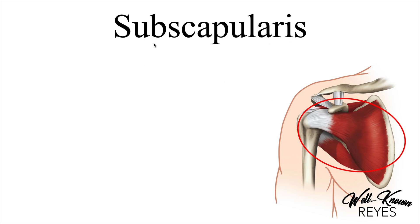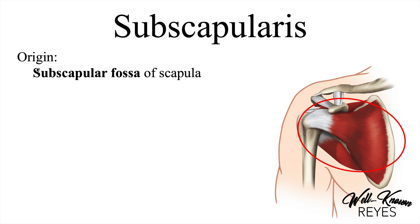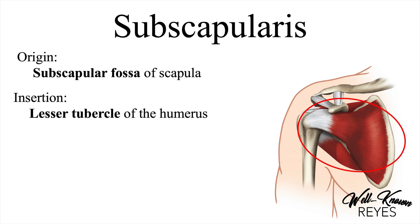The prefix 'sub' means underneath or below, so the subscapularis is underneath the scapula. It originates at the subscapular fossa of the scapula — again, 'sub' meaning below or underneath. It inserts at the lesser tubercle of the humerus, which is different from the others. The subscapularis is the only rotator cuff muscle that inserts at the lesser tubercle. Supraspinatus, infraspinatus, and teres minor all insert at the greater tubercle. In between the lesser and greater tubercle we have the intertubercular groove, also known as the bicipital groove.